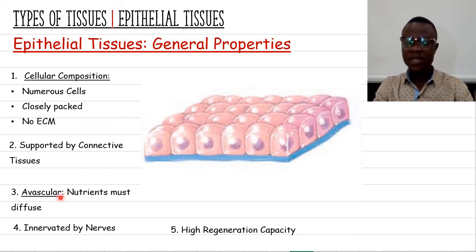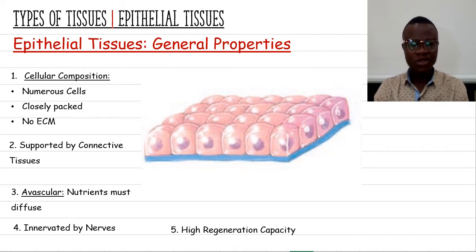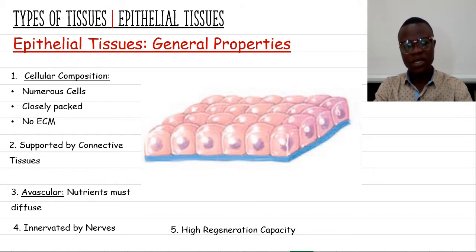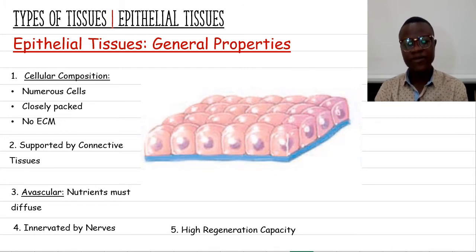Epithelial tissue is avascular — it does not have blood vessels. The question then arises: how does it get nourished? The nutrients that reach epithelial tissue diffuse from the underlying connective tissue to reach these cells. So although they don't have blood vessels, they are still nourished by the process of diffusion.